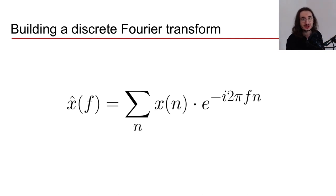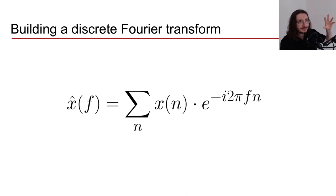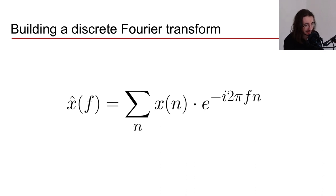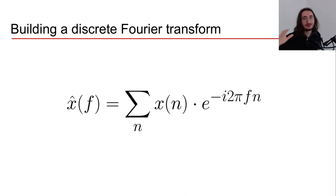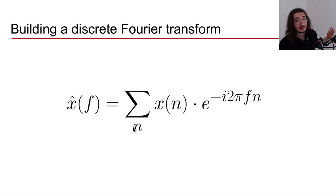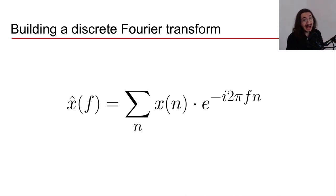A continuous or infinite frequency, and an infinite number of samples — neither of these can work with our digital machines due to computational and memory constraints. So we have to sort both issues out.